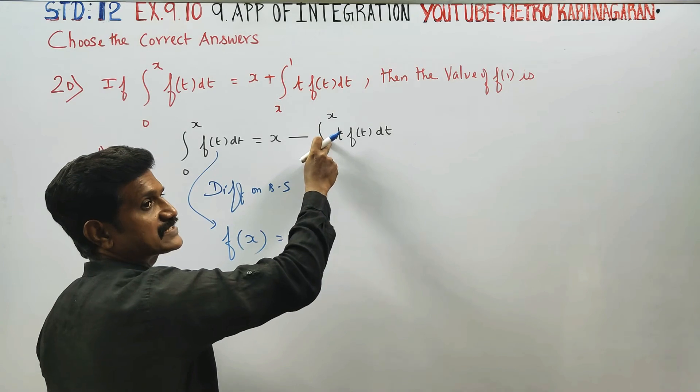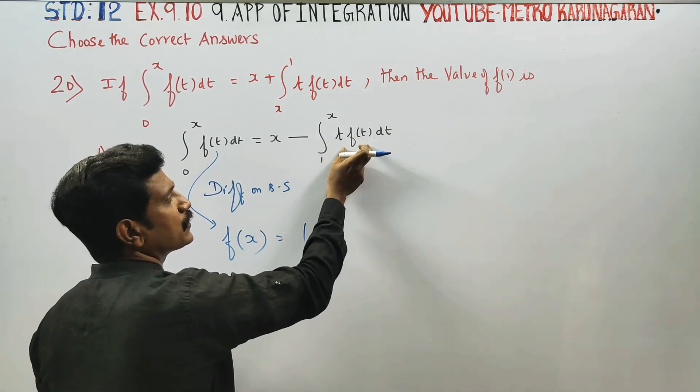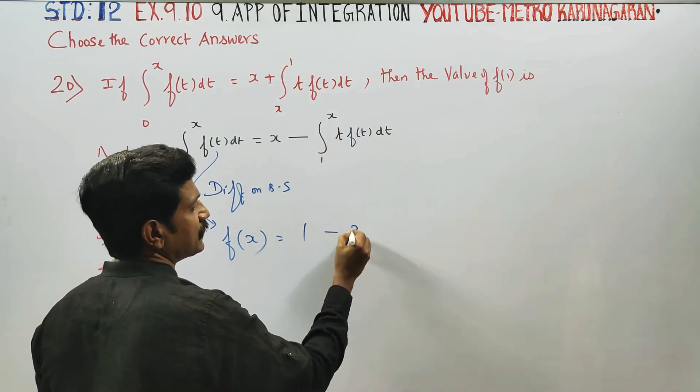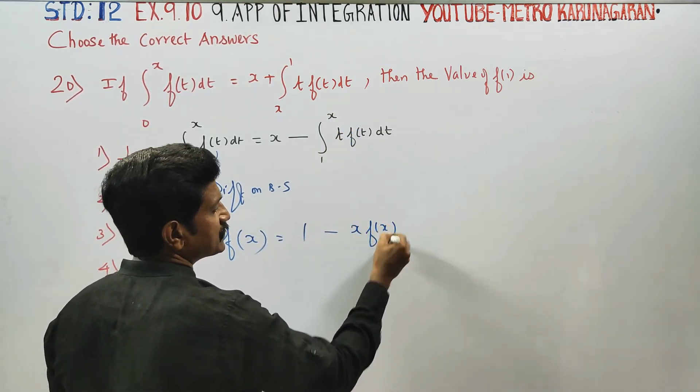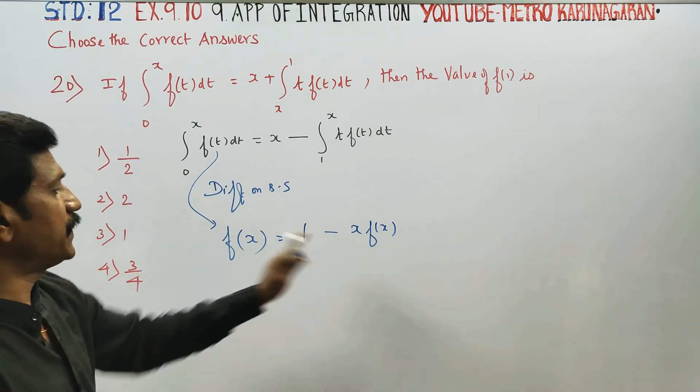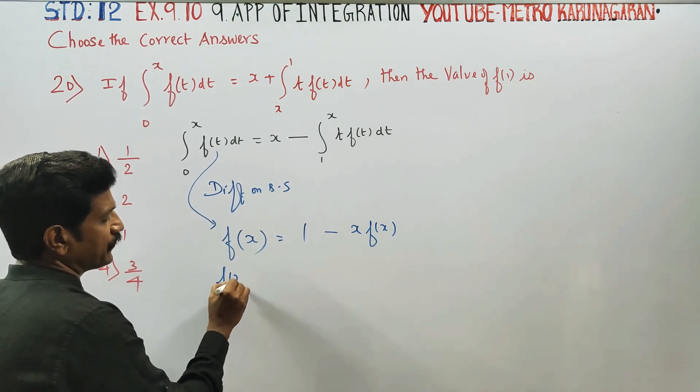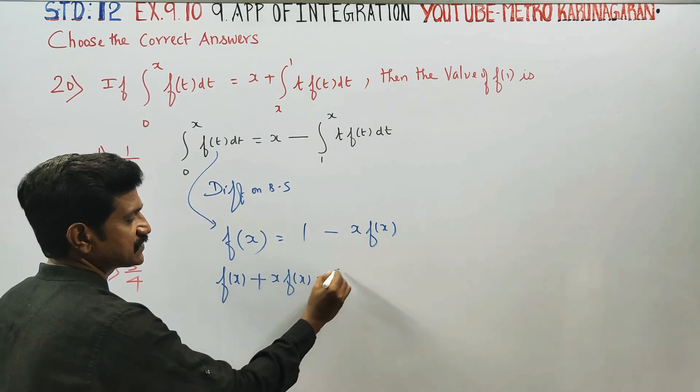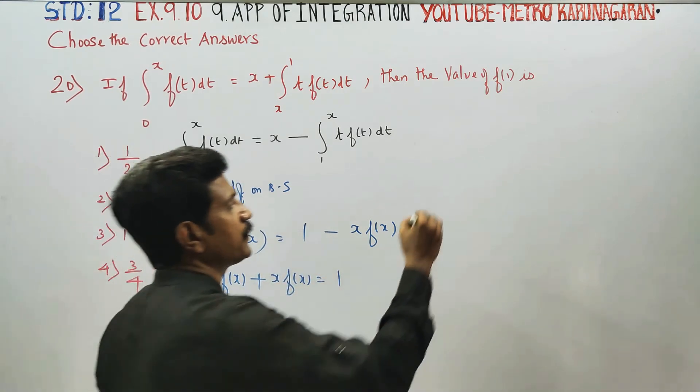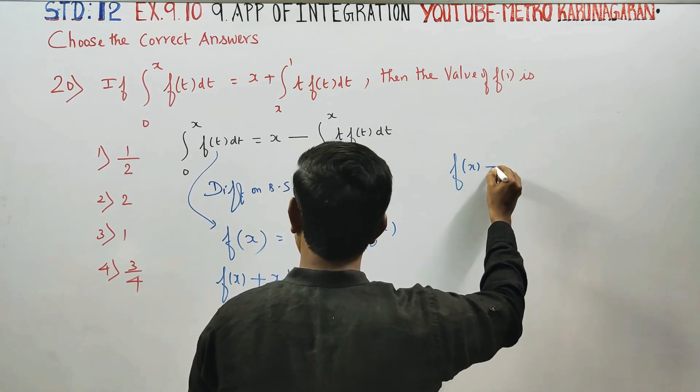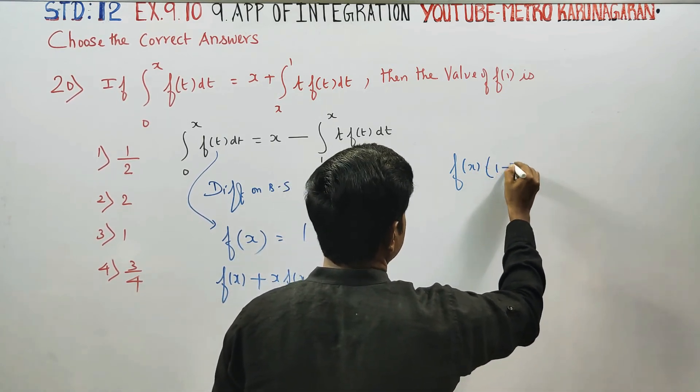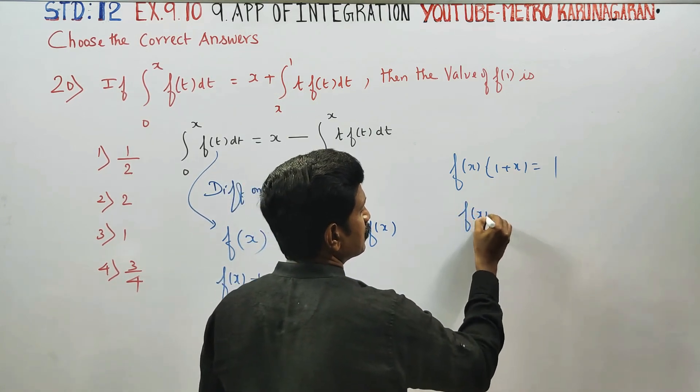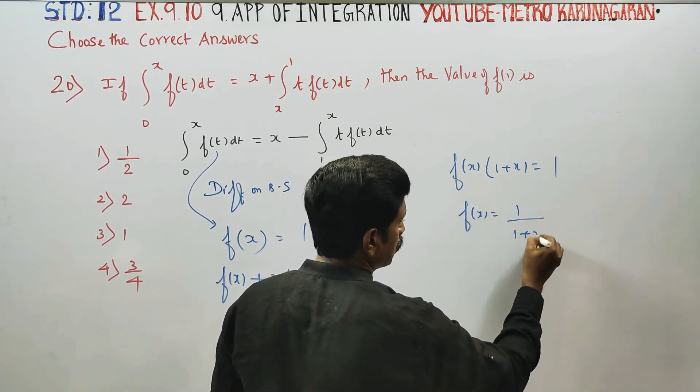Differentiation integration cancel. Cancel it. f(x) is common, 1 plus x equals 1. f(x) equals 1 by 1 plus x.